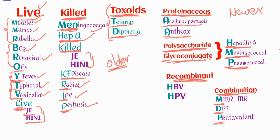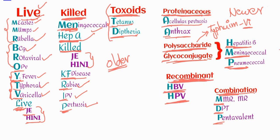One more vaccine to remember in polysaccharide vaccines is typhim Vi. 'Vi' here indicates the Vi polysaccharide antigen. Then recombinant vaccines are HBV and HPV — we can remember it using RH compatibility: RH stands for recombinant, H for HBV (hepatitis B virus), and HPV (human papillomavirus).